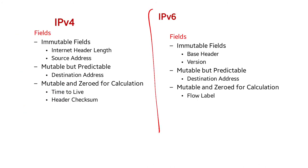For IP version 4, the immutable fields used in MAC calculation include version, Internet header length (IHL), and source address. Mutable and predictable fields include destination address. Mutable and zeroed-for-calculation fields include time-to-live and header checksum. IP version 6 similarly categorizes fields as immutable, mutable-predictable, and mutable-zeroed for calculation.